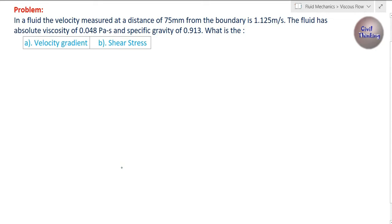Welcome to this lecture of fluid mechanics. We are covering viscous flow and today we are going to solve a problem on Newton's law of viscosity. In a fluid, the velocity measured at a distance of 75 mm from the boundary is 1.125 meters per second.